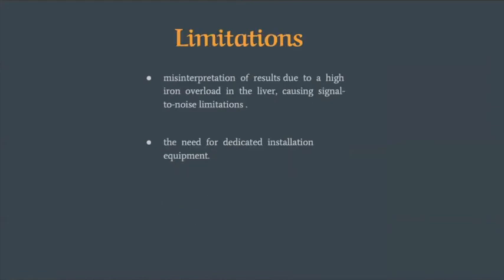Limitations: misinterpretation of results due to high iron overload causing signal-to-noise limitation. If the patient had higher iron overload, we can wait if the patient was under treatment. When the iron content decreases, we can do elastography; otherwise we can't do it. Also, the need for dedicated installation of this equipment. As we see, the driver, we have to buy this equipment; it is extra equipment, it doesn't come with the magnet, unlike ultrasound-based elastography. The ultrasound probe just needs the license for that program.